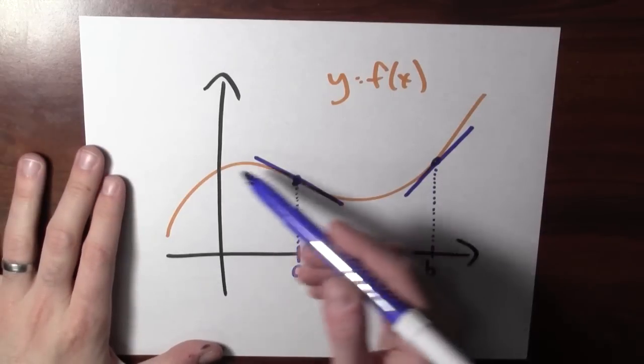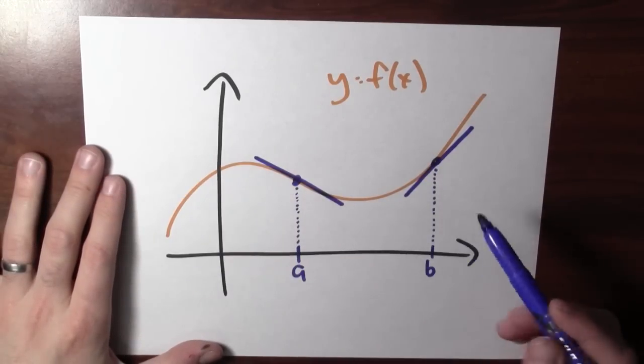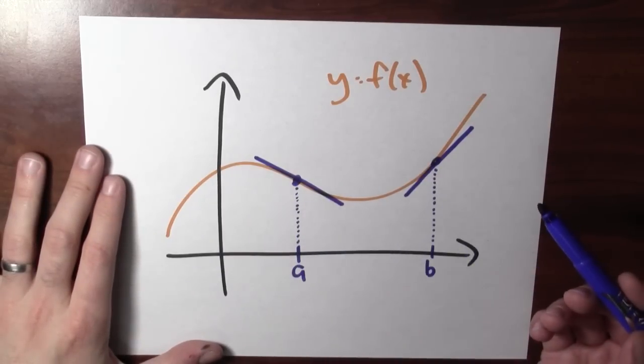Earlier, we saw how the sign of the derivative encoded whether the function was increasing or decreasing. Thinking back to the graph, here I've just drawn some random graph. What is the derivative encoding?